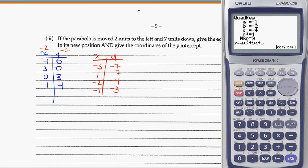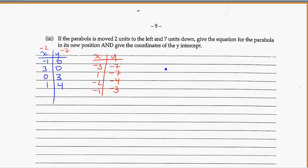So let's write out what we get for this equation: y is equal to negative x squared minus 2x minus 4. You can write that as y equals minus x squared minus 2x minus 4 — you don't have to put in the 1.